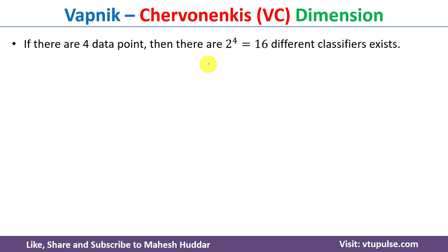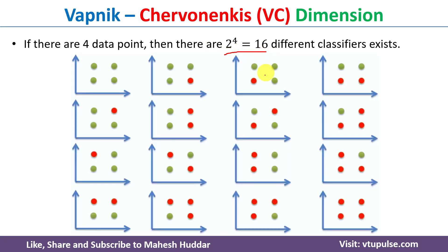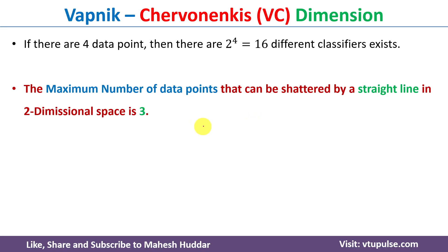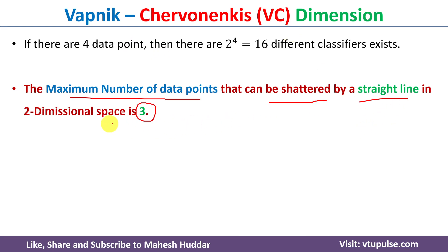Moving to four data points — the total number of possibilities is 16. In this case, some of the labelings can be classified correctly, but some cannot. For example, certain diagonal or cross-pattern labelings cannot be separated by a straight line in any orientation — any line drawn will misclassify some examples. Therefore, the maximum number of data points that can be shattered by a straight line in two-dimensional space is three. That is why the VC dimension of a straight line is 3.